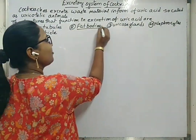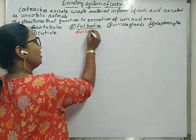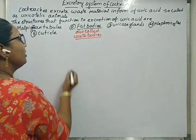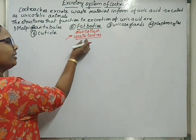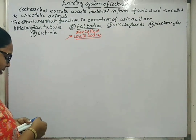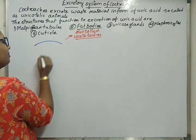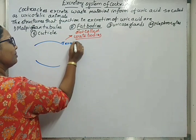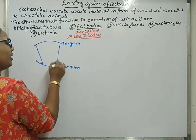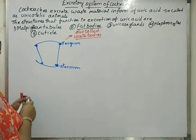Next, fat bodies. Fat bodies are also called urate bodies or urate cells. When uric acid accumulates in these fat bodies or urate bodies, they get deposited beneath the exoskeleton, which is removed during shedding or moulting. Cockroach has tergum, sternum, and pleura attached by arthrodial membranes. Fat bodies are yellowish in color.